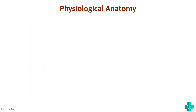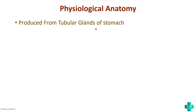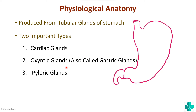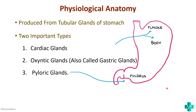In the introduction we write about physiological anatomy. Gastric secretion is produced from the stomach, specifically from the tubular glands. There are three important types: cardiac glands, oxyntic glands, and pyloric glands. The cardiac glands are present near the lower esophageal sphincter. The oxyntic glands are mainly present in the fundus and body and produce HCL. The pyloric glands are in the pyloric region and have more G cells which produce gastrin.